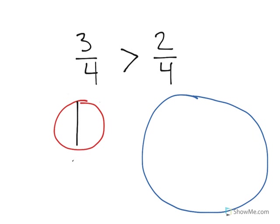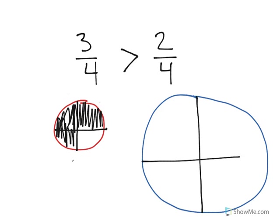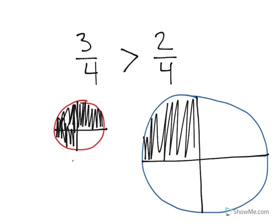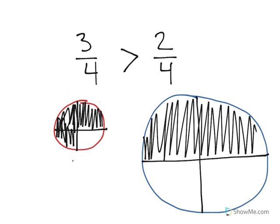And of my pizza, I ate three-fourths of it. So I ate this amount of pizza. And when John went to the store, he ate two-fourths of his pizza, meaning that he had this amount of pizza.